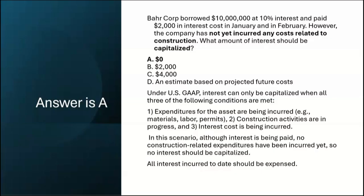The answer is A — zero. Under U.S. GAAP, interest can only be capitalized when all three conditions are met: one, expenditures for the asset are being incurred — materials, labor, permits — these costs haven't been incurred yet; two, construction activities are in progress — not yet; and three, interest cost is being incurred. Maybe number three is met, but you need all three. In this scenario, although interest is being paid, no construction-related expenditures have been incurred yet, so no interest should be capitalized — all interest incurred to date should be expensed.